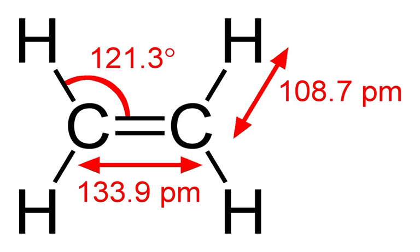Being a simple molecule, ethylene is spectroscopically simple. Its UV-vis spectrum is still used as a test of theoretical methods.